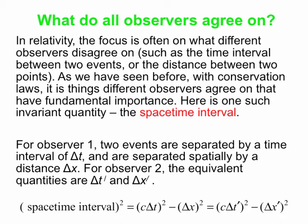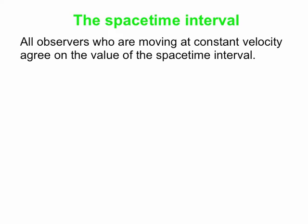One thing to notice is the units in our equation. Delta x is measured in units of length. We've also got a time interval multiplied by c, the speed of light in vacuum — and when you multiply speed by time you get length. So in some sense we're measuring time in units of length here. The bottom line is all observers moving at constant velocity — that is, in inertial reference frames — agree on the value of the space-time interval.